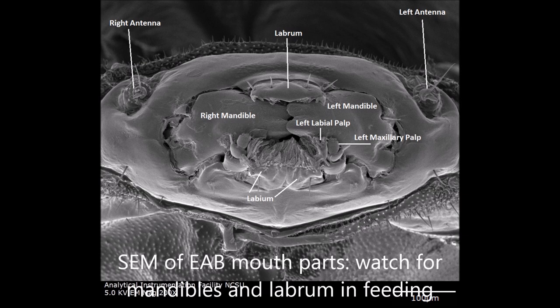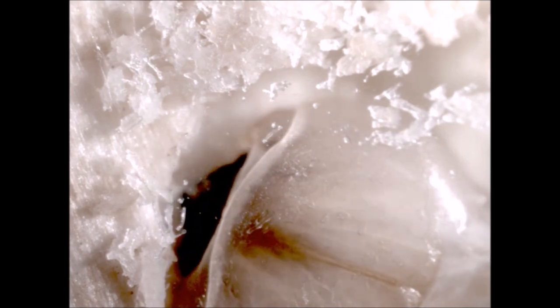These close-ups of the mouth parts in action show that the insect uses liquid from its oral secretions, from its digestive system, and it pre-digests the food, which is what we mean by extra oral digestion.